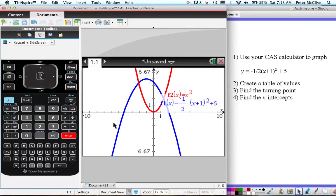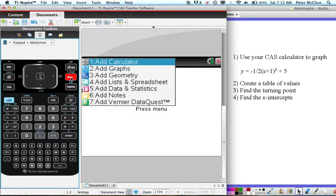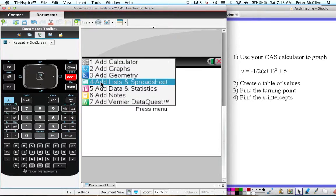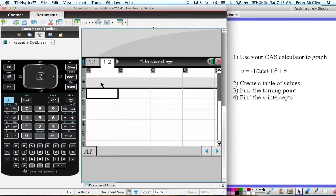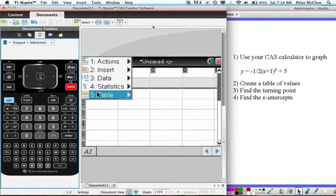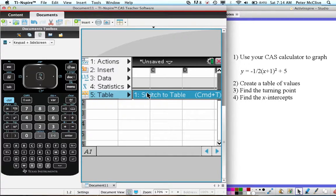We've done the first thing, we've done the graph. I want to create a table of values, so to do that I'll need a new page. I'm going to go control doc and add a list and spreadsheet number 4. Now that I'm in the spreadsheet function, that's given me a new page 1.2. I'm going to hit menu and go to number 5 table and then number 1 switch to table.